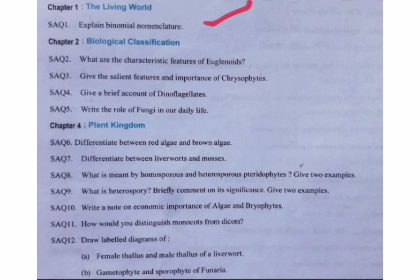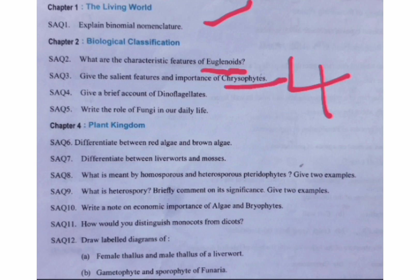Second chapter: biological classification. In that chapter there are total four important short answers: euglenoids and their salient features or characteristic features, chrysophytes, dinoflagellates, and the role of fungi in our daily life. So these four answers — one will be coming in the final exam.